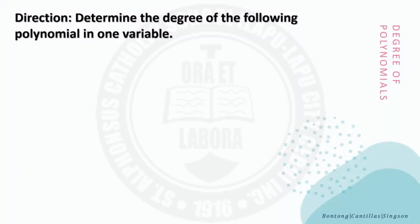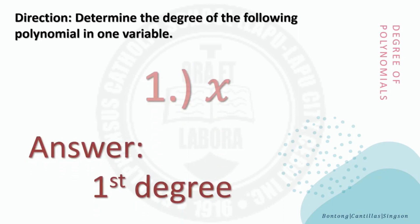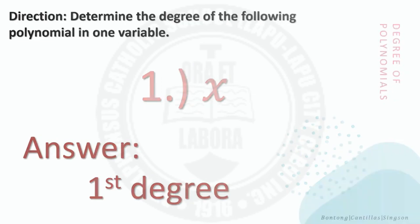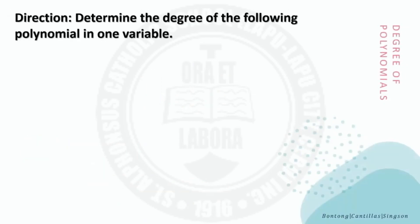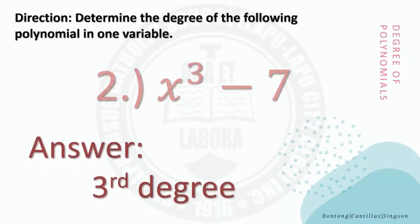Determine the degree of the following polynomial in one variable. Number 1: x. The degree of the polynomial is first degree because the exponent of this term is 1. Number 2: x cubed minus 7. The degree of this polynomial is third degree because, among the two terms, the highest degree is 3.